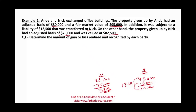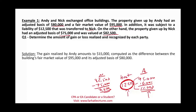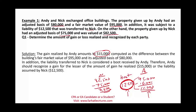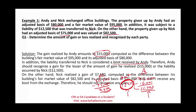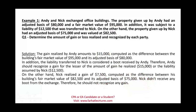Determine the amount of gain realized and recognized. We already computed the realized gain for both parties. Andy would have a recognized gain because Nick took over the mortgage of $12,500 — there's a boot. The gain recognized is the lesser of the boot or the realized gain. The boot is lower at $12,500. Nick realized a gain of $7,500 but did not receive any boot, so he should not recognize any gain.